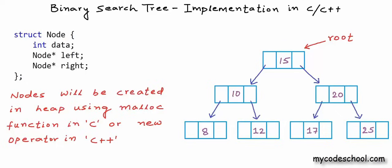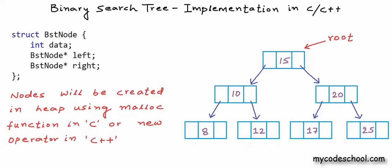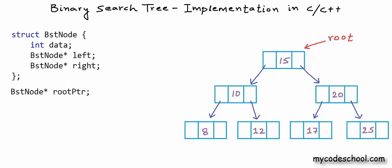For a linked list, the information we always keep with us is the address of the head node — if we know the head node, we can access all other nodes using links. In case of trees, the information we always keep with us is the address of the root node. If we know the root node, we can access all other nodes in the tree using links. To create a tree, we first need to declare a pointer to BST node that will always store the address of the root node.